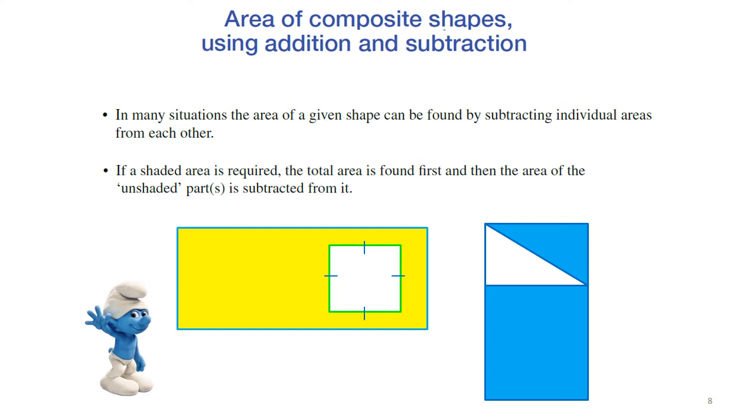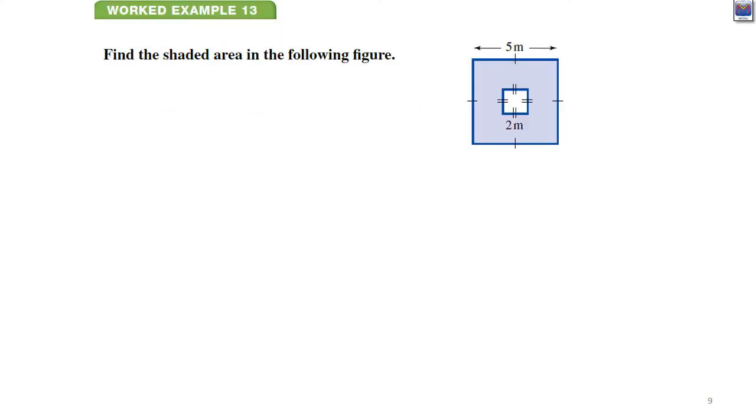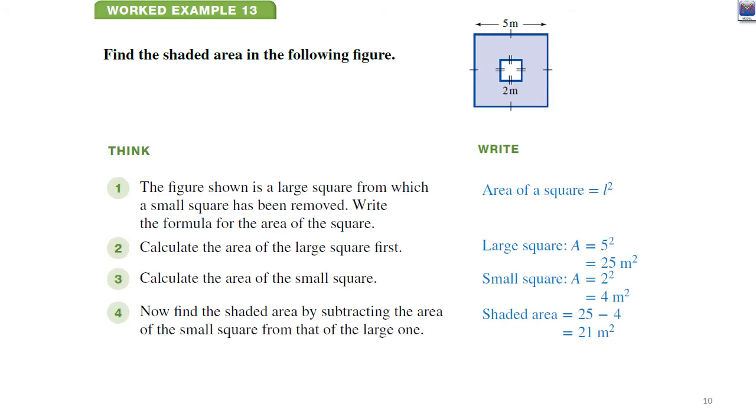So this is the subtraction part. Sometimes we might subtract an area. In this yellow rectangle here we might work out the area of the entire rectangle, work out the area of this square in the middle and take this area away from the whole thing. Same with this one. Work out the area of the entire rectangle, work out the area of this triangle and subtract this away from the whole thing. I like this one here. Find the area of the shaded part. I can work out the area of the entire square, work out the area of this small white square in the middle and take him away from the big area.